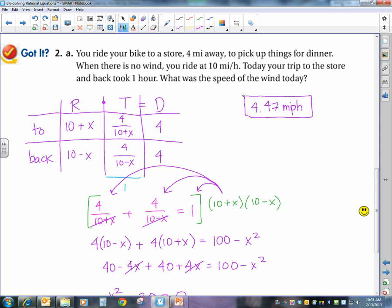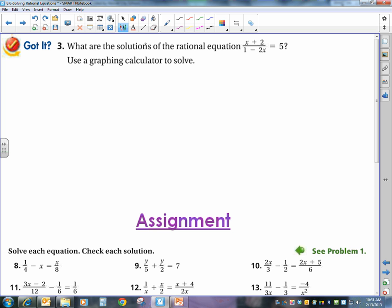The last problem that we have to talk about today is to use a graphing calculator. We've talked about this a lot in class. I want to do it algebraically again to show you real quick. This is a proportion, so if you cross-multiplied, you would get x plus 2 equals 5 minus 10x. That gives me 11x equals 3, and x equals 3 over 11. Let's go check it on our graphing calculator.